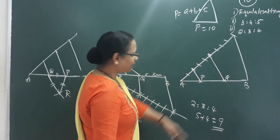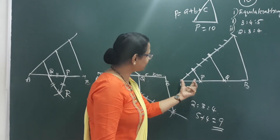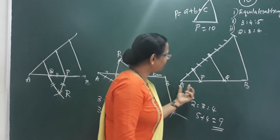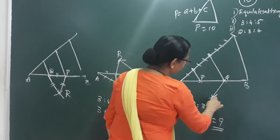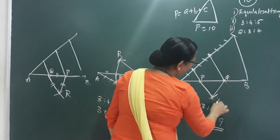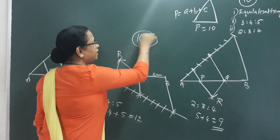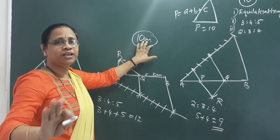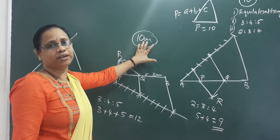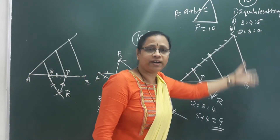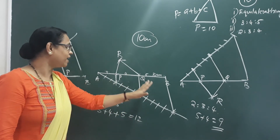For the triangle with sides ratio 2 is to 3 is to 4: 2 plus 3 plus 4 equals 9 total parts. This is a 10 cm line AB. We divide it into 9 parts: 1, 2, 3, 4, 5, 6, 7, 8, 9. We mark 2 parts, then 3 parts: 1, 2, 3, 4. Using parallel lines PQ, the triangle sides are in ratio 2 is to 3 is to 4. We join to form the triangle PQR with perimeter 10 cm.